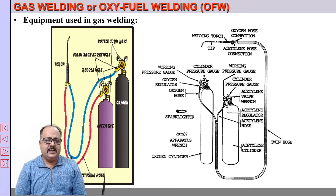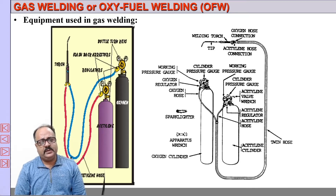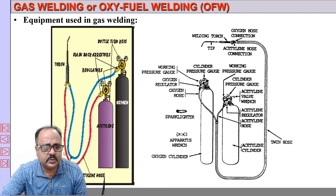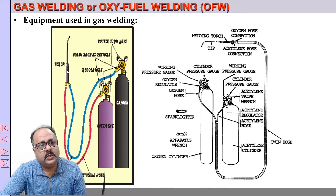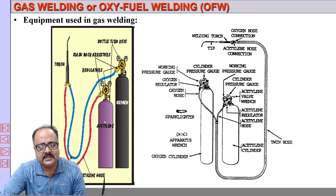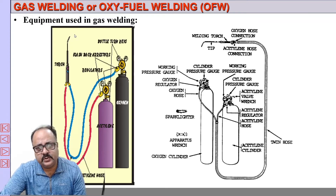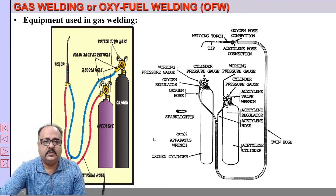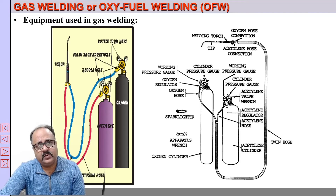We essentially require a fuel cylinder and an oxygen cylinder. Pressure regulators on top of the cylinders regulate the pressure of the gases. Both gases come through a hose and reach a torch, where they mix in the required proportion. You can control the amount of oxygen and fuel gas — in this case, acetylene — mixed inside the torch. The mixture comes out from the tip, which is the nozzle, and is ignited by a spark, causing a flame. This flame is used to heat and melt the metal to obtain metal continuity, or welding.